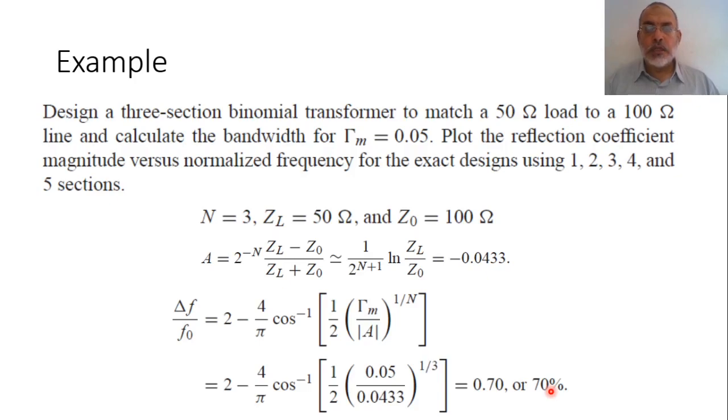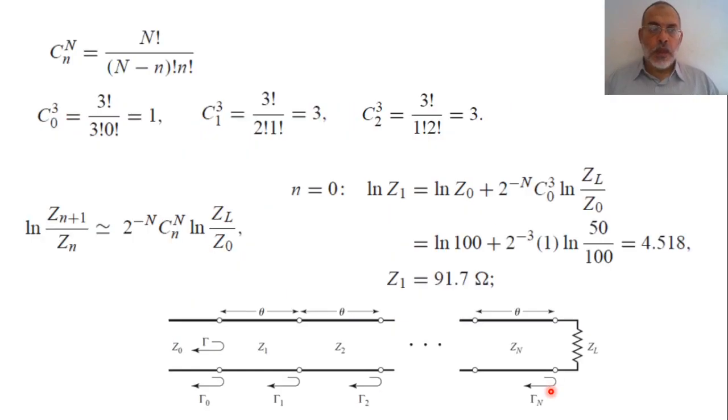Now it is required to determine the characteristic impedance of the different sections. It is required to determine Z1, Z2 and Z3 of the three sections of this transformer. To do this, let us first calculate the coefficient of the binomial function. The coefficient of the binomial function is given by Cn equals the factorial of N over the factorial of N minus n multiplied by the factorial of n, where small n is starting from 0 to capital N.